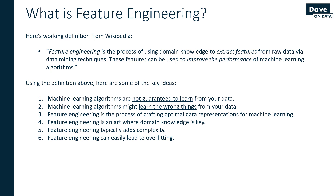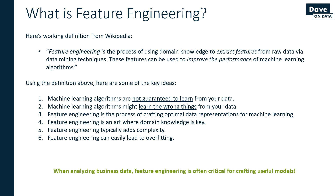When you're analyzing business data with machine learning, feature engineering is often the most critical aspect of the whole process for creating useful models. Generally speaking, the raw data that you have access to in the business world is not in an optimal format for machine learning models. In the next slide, we'll characterize one particular common form of data that almost always needs feature engineering, and that is date and time data.